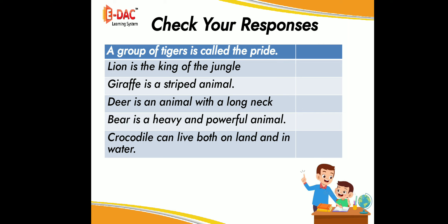Show thumbs up for a correct statement and thumbs down for a wrong statement. First: a group of tigers is called pride. Second: lion is the king of the jungle. Next: giraffe is a striped animal. Next: deer is an animal with a long neck. Next: bear is a heavy and powerful animal. Next: crocodile can live both on land and in water.